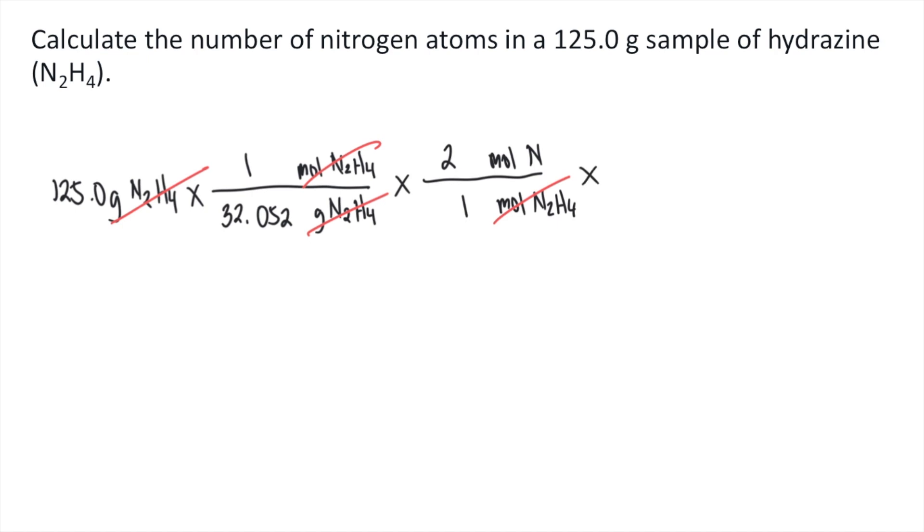And then finally, we can now convert the moles of nitrogen into atoms of nitrogen. How do we do that? We will use the Avogadro's number. So for every one mole of nitrogen,